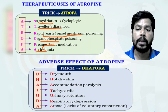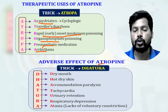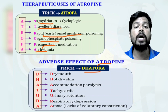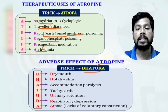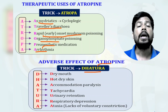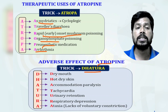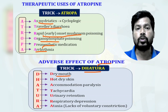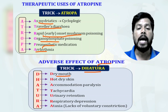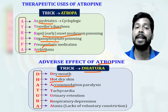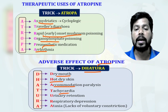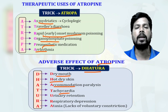The adverse effects of atropine can be remembered using the trick 'DATURA' — which is also a tropane alkaloid and parasympatholytic in nature. Since atropine acts opposite to acetylcholine, it causes dry mouth by decreasing salivary secretions, heat and dry skin by decreasing sweating, accommodation paralysis — paralysis of the ciliary muscle in the eye — and tachycardia with excess usage.